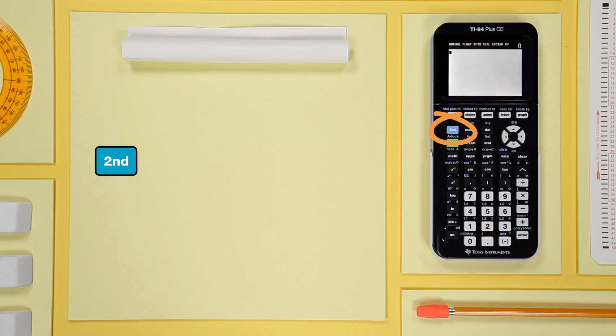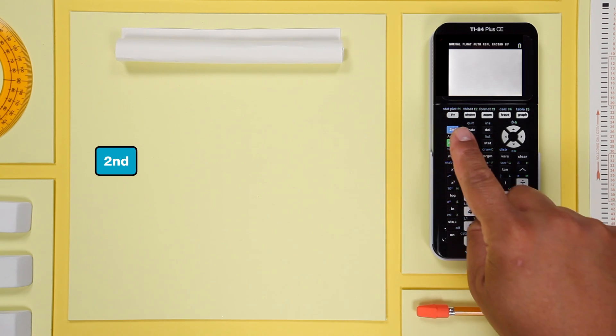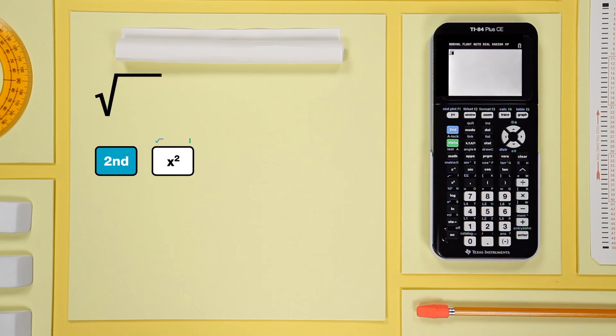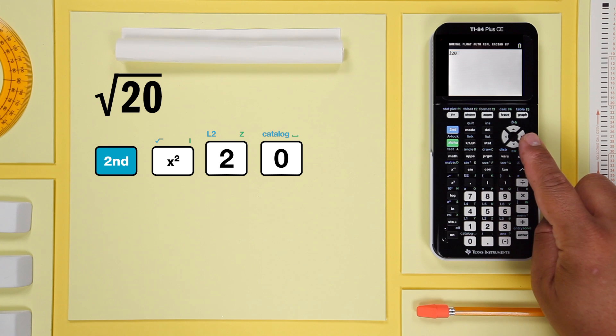Start with the second key. It activates the blue commands over the keys. So to enter the square root of 20, press second square root—it's the blue command over the x-squared key—20, and the right arrow.